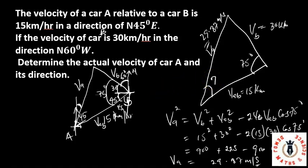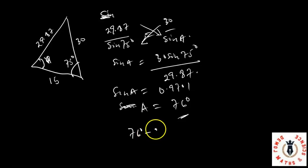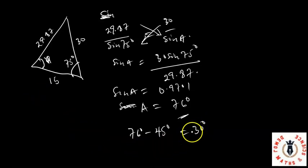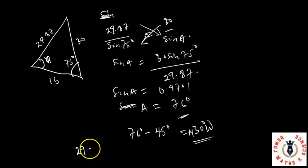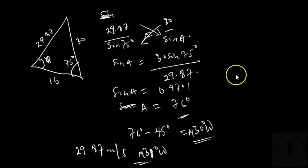Since the angle at A is 76 degrees, but 45 degrees already fall in one quadrant, the angle falls into the other quadrant. So the actual direction angle is 76° − 45° = 31 degrees. Conclusively, the velocity of car A is 29.87 km/h acting in the direction of 31 degrees north-west. Thank you for staying with us and see you in the next class.